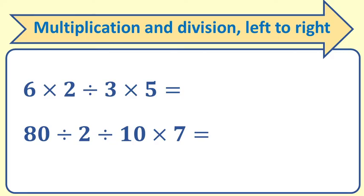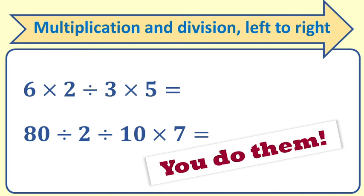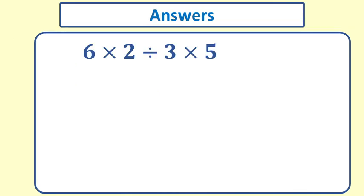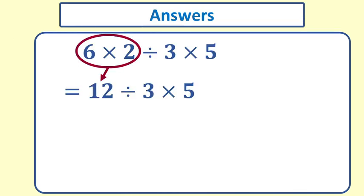You try them first. 6 times 2 divided by 3 times 5. 80 divided by 2 divided by 10 times 7. I hope you try them. 6 times 2 divided by 3 times 5 equals 12 divided by 3 times 5 equals 4 times 5 which equals 20.